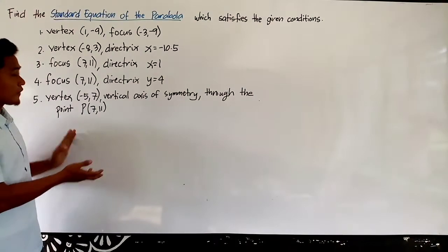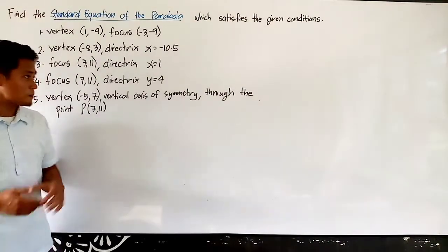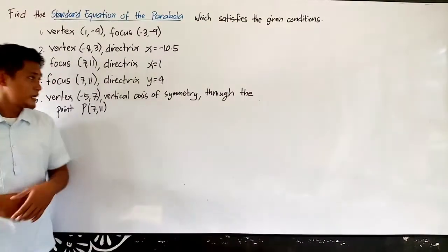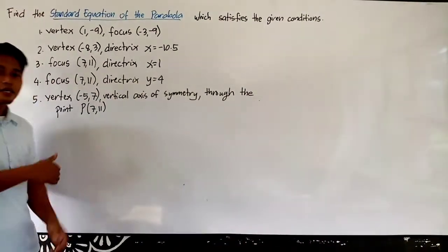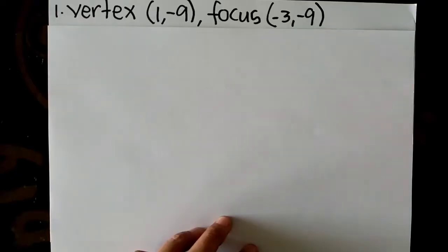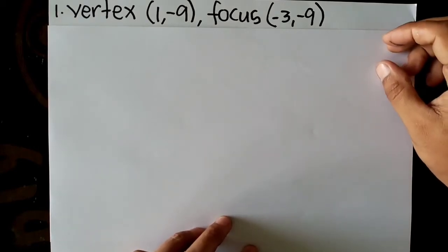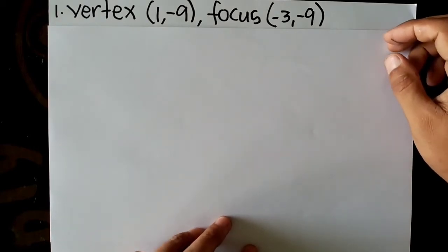So I have five examples for us to understand. Let us start! Number one, we have vertex (1, -9) and focus (-3, -9).